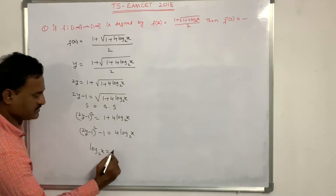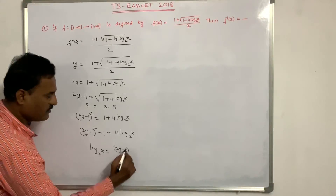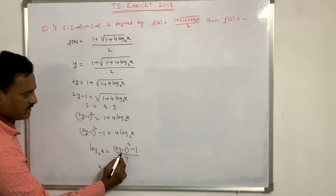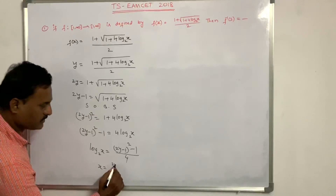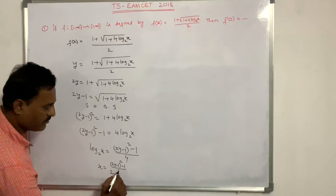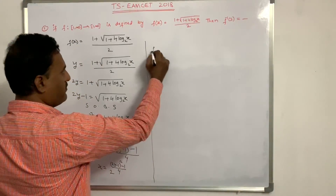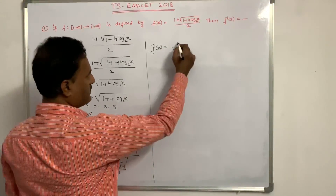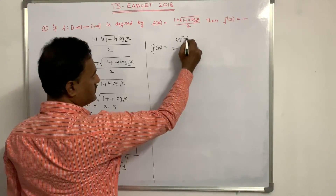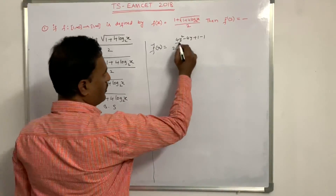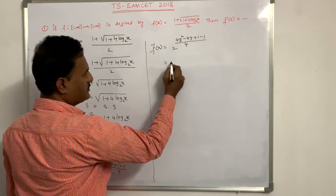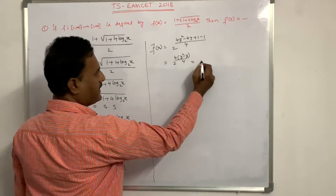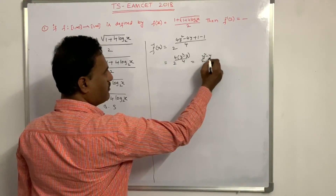So (2y minus 1) squared minus 1 equals 4 log x base 2, therefore log x base 2 equals (2y minus 1) squared minus 1, all divided by 4. Therefore x equals 2 to the power of (2y minus 1) squared minus 1 divided by 4. Expanding: (2y minus 1) squared is 4y squared minus 4y plus 1, so minus 1 cancels, giving 2 to the power of (4y squared minus 4y) divided by 4, which simplifies to 2 to the power of y squared minus y.